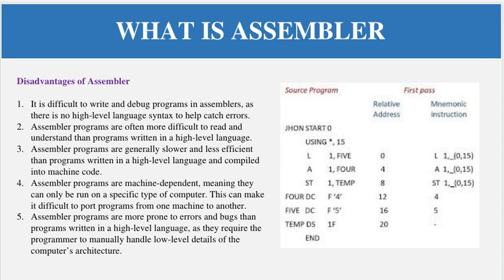Now the disadvantages: it is very difficult to write code in assembly language — it's not easy. Assembly programs are often more difficult to read as well. Assembly programs can be less efficient than programs written in high-level languages and compiled to machine code. Assembly programs are machine-dependent, meaning they can only run on a specific type of computer. They are also more prone to errors and bugs than high-level language programs, as they require the programmer to manually handle low-level details of the computer architecture.